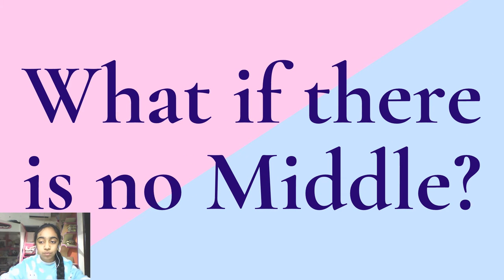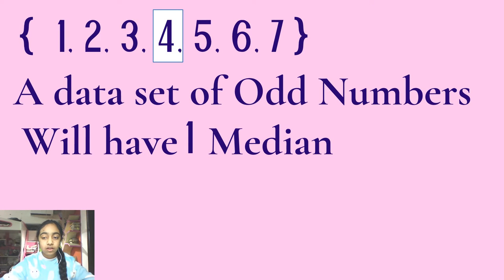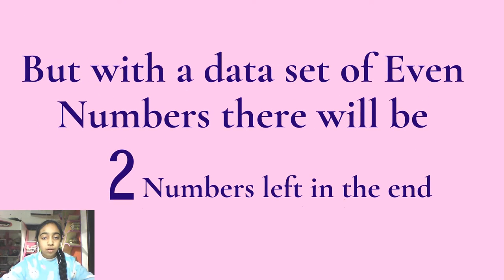But what if there is no middle? Only a data set with odd numbers will have 1 median. But with a data set of even numbers, there will be 2 numbers left in the end.